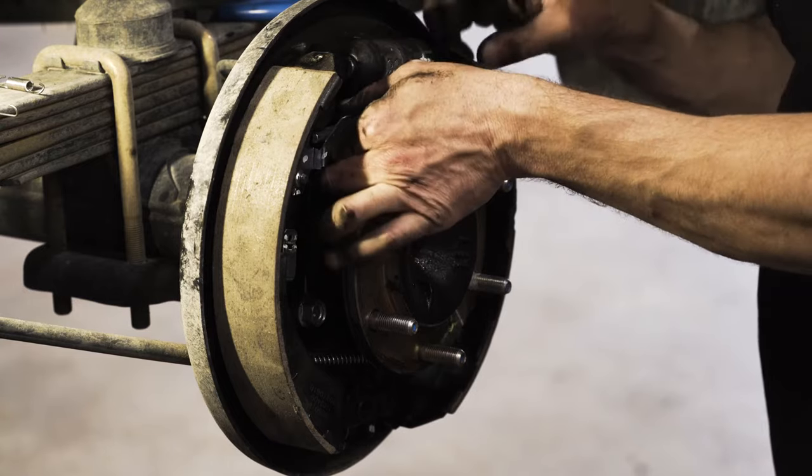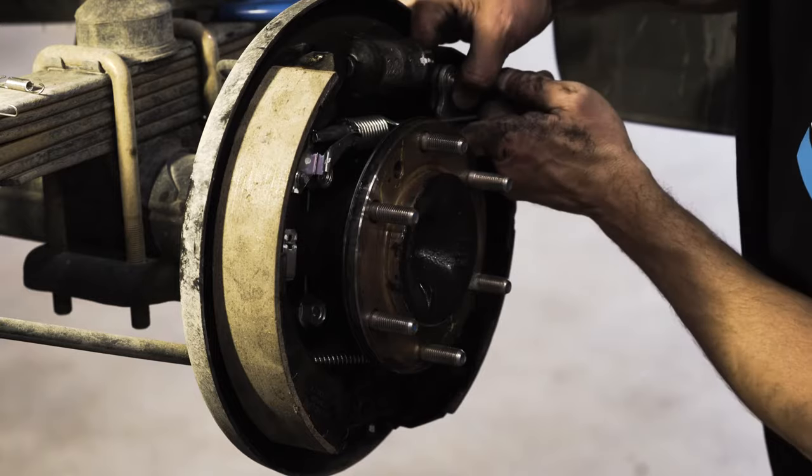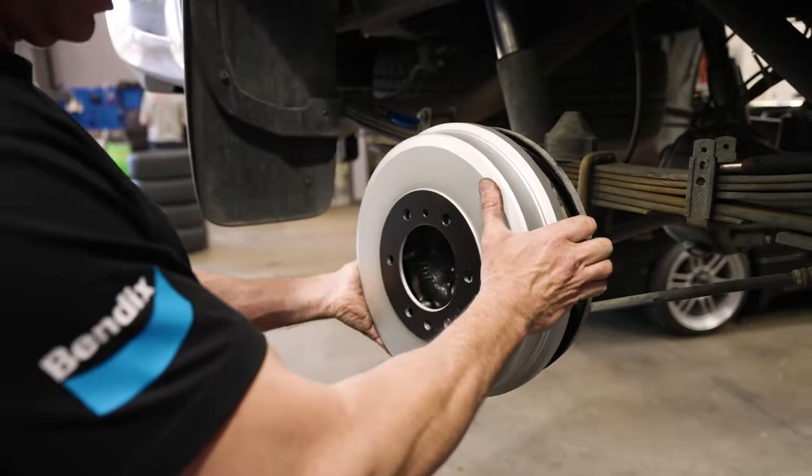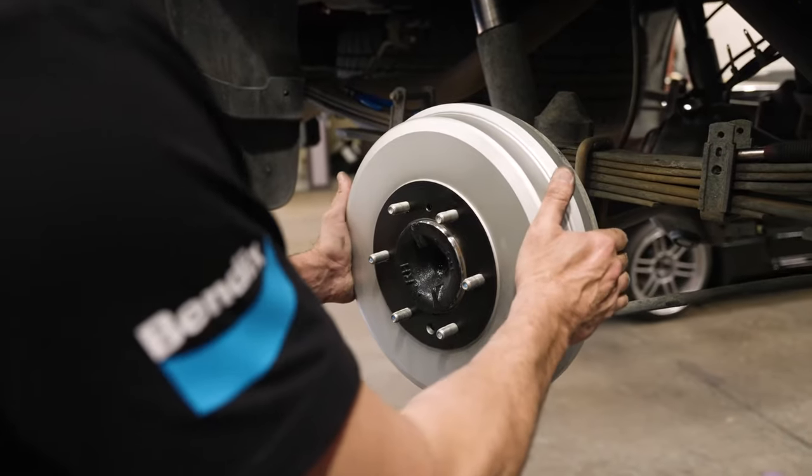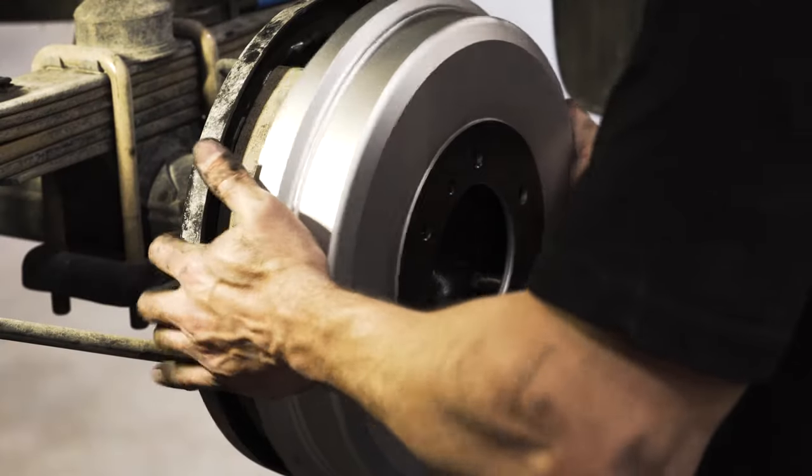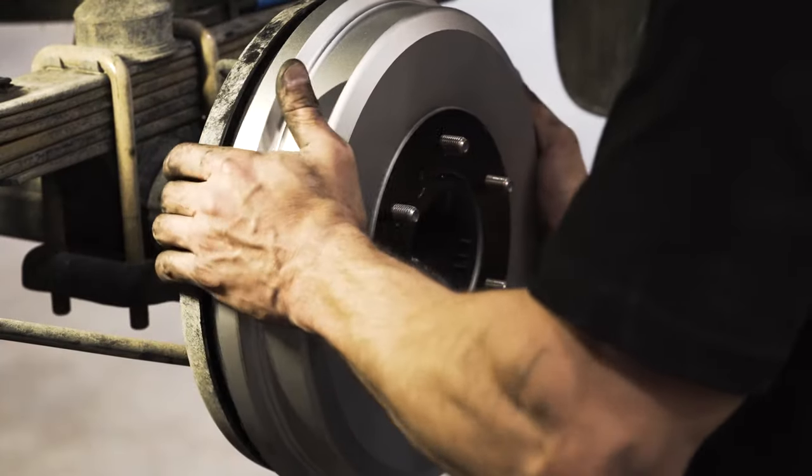Use the adjuster at the top of the drum brake assembly to wind out the brake shoes and attempt to refit the drum. If the drum won't go back over the shoes, you've adjusted it too far. If the drum fits and you don't feel any drag between the drum and the shoe, you'll need to adjust it out some more.